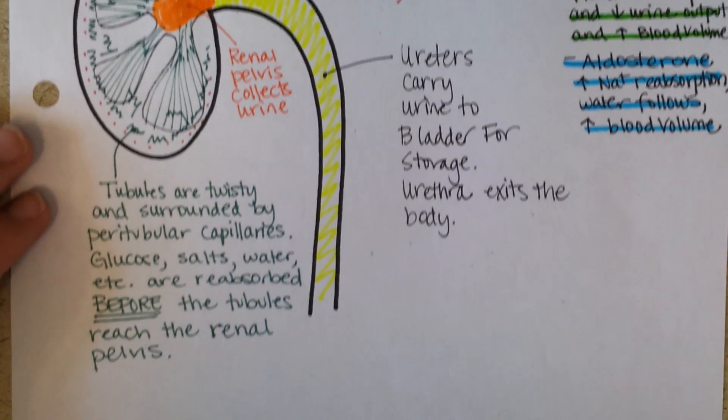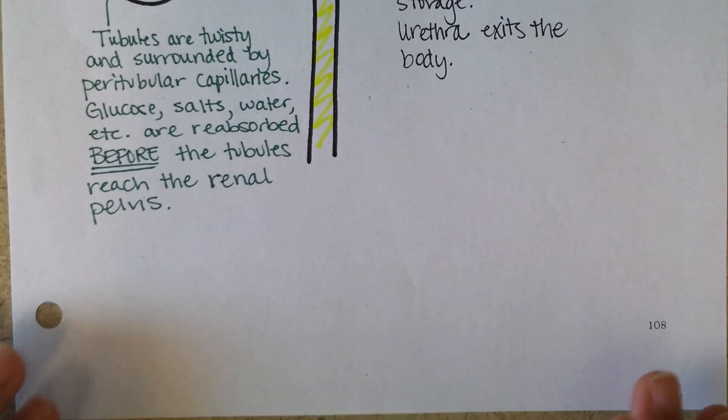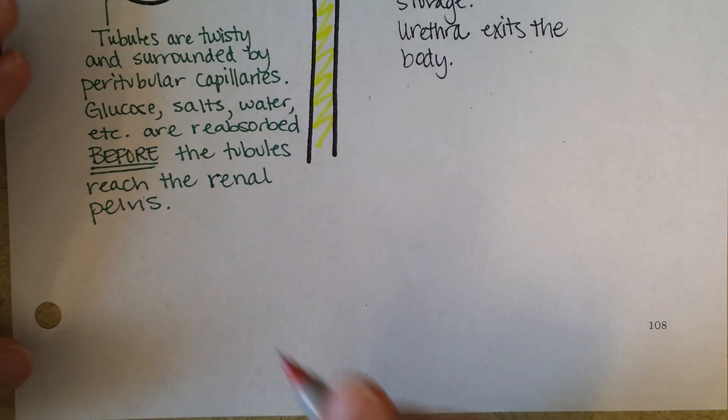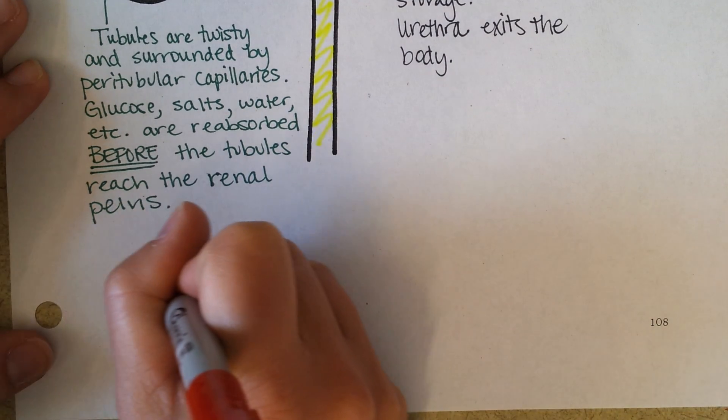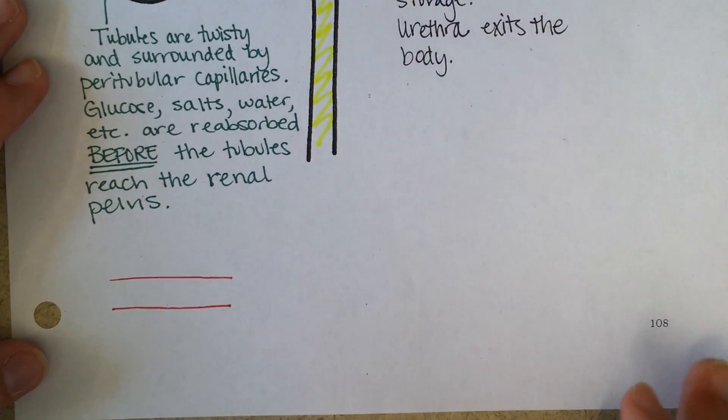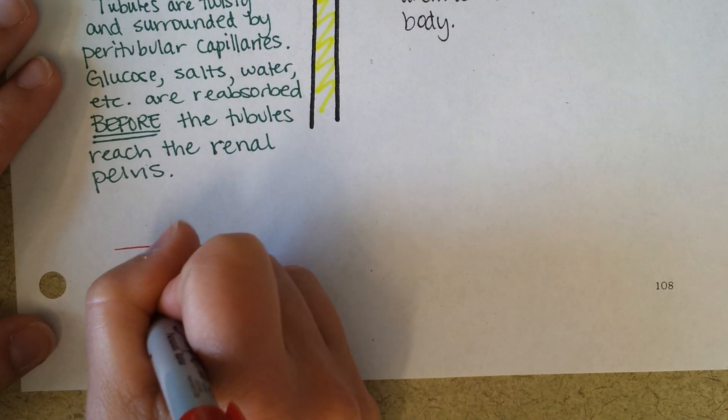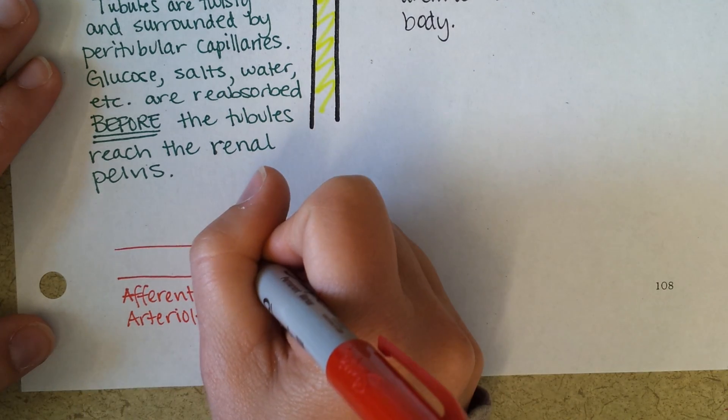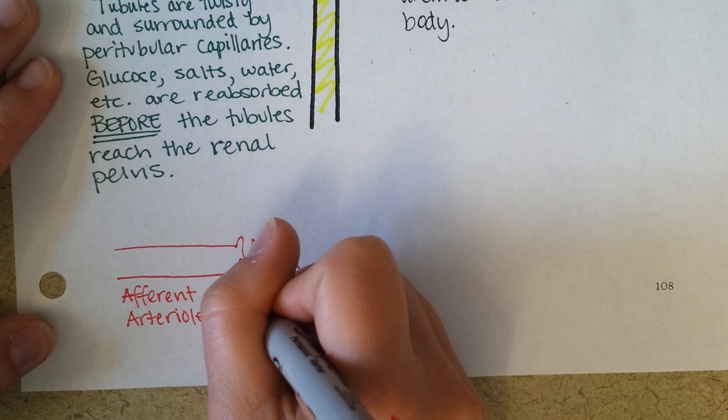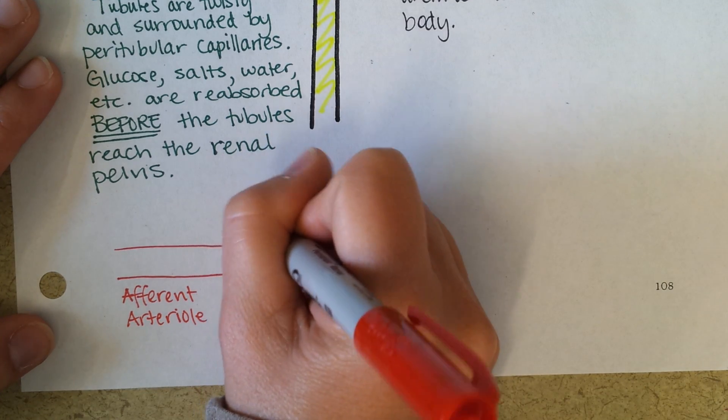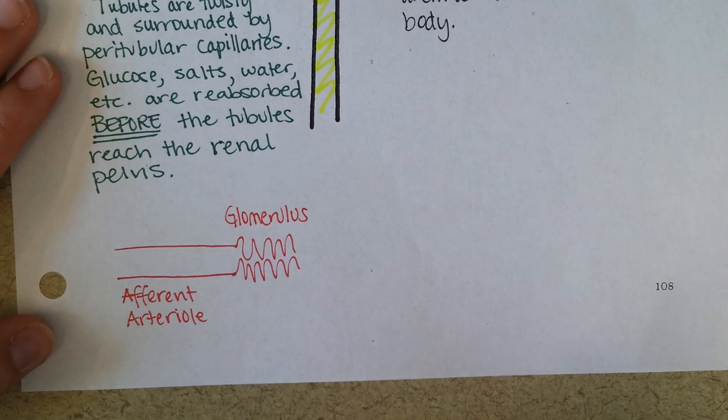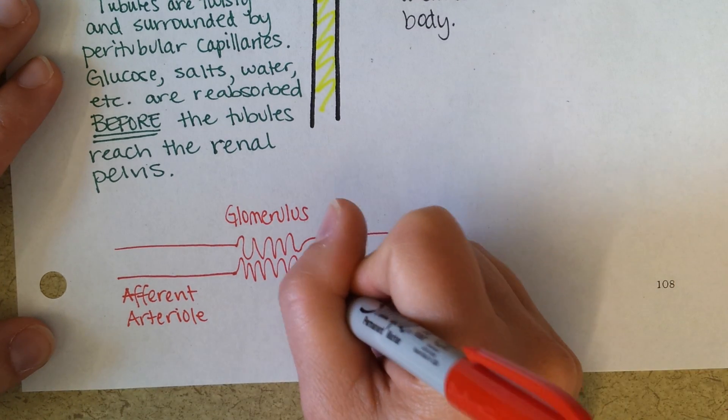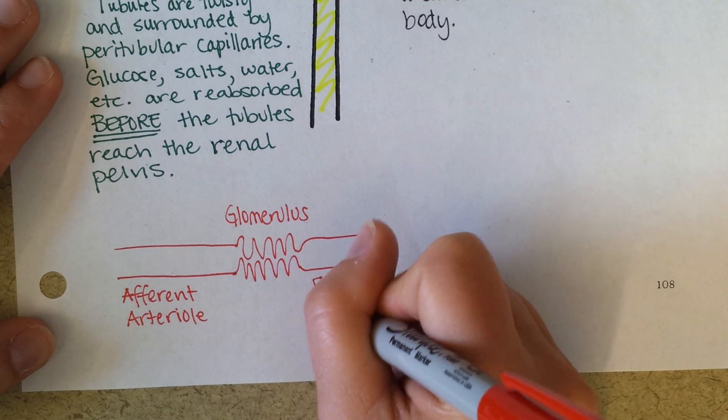So what I want to show you down here is a little schematic, sort of stretching out the capillary system. Okay, so you've got an afferent arterial, and then a glomerulus, and hopefully you get by now that that's a capillary bed, and then the efferent arterial.